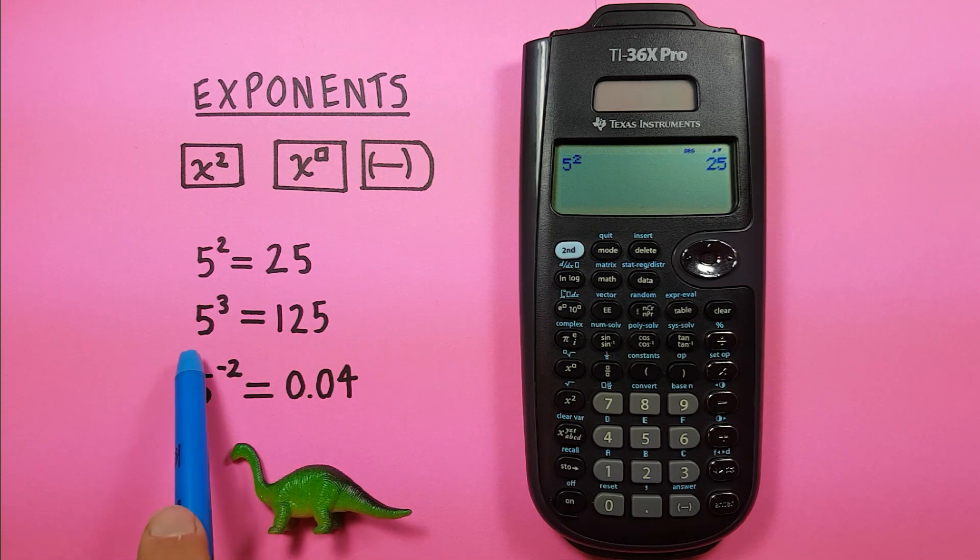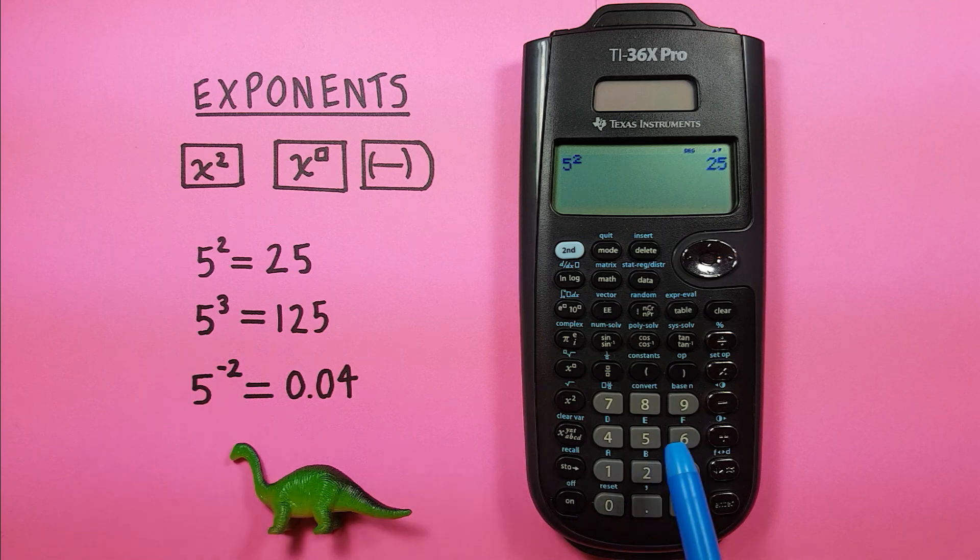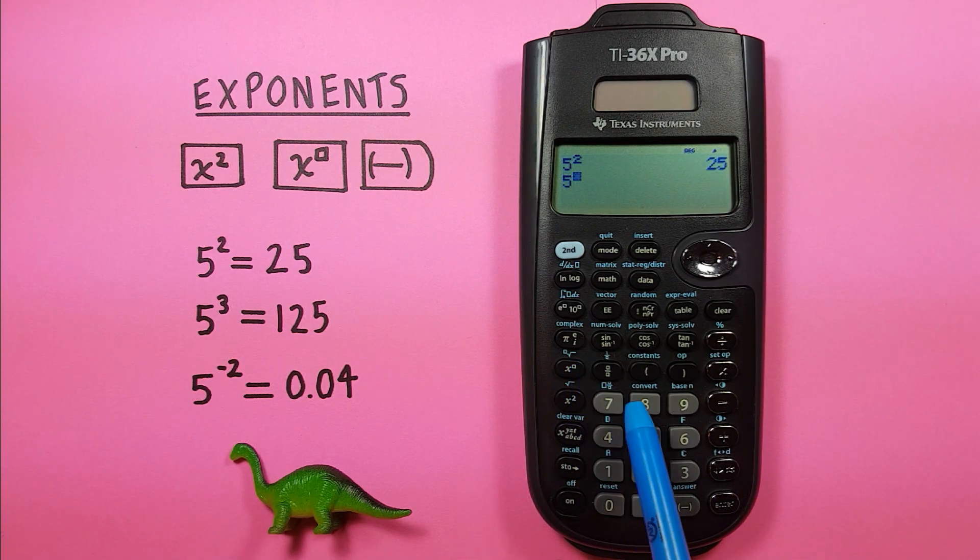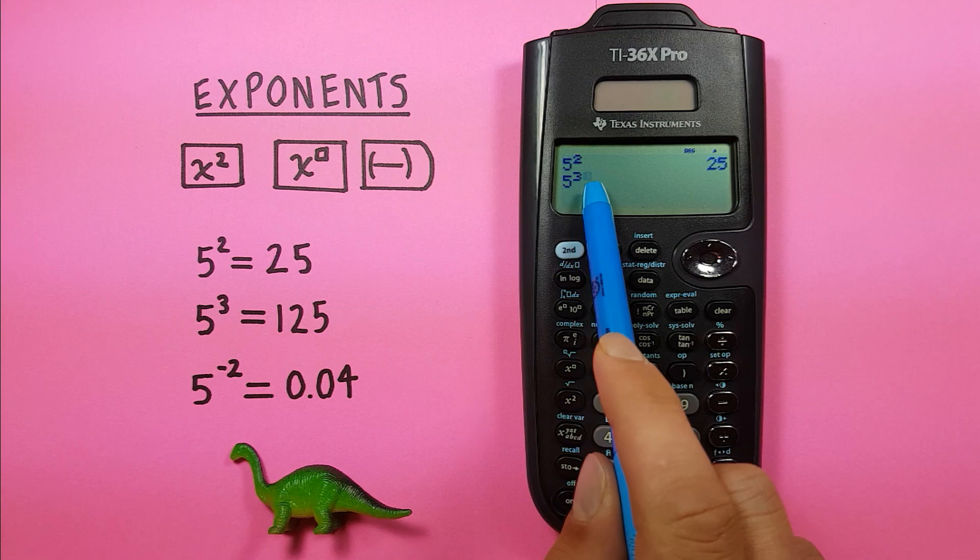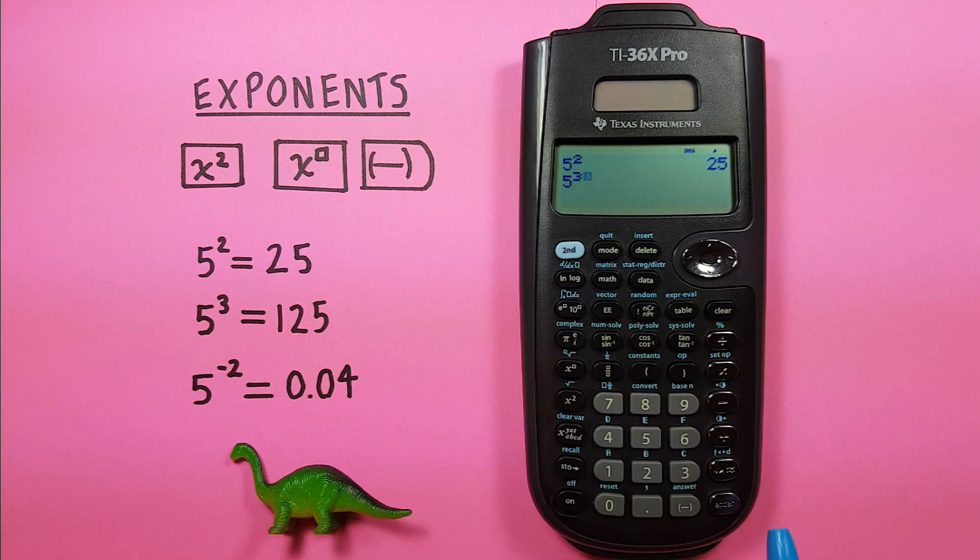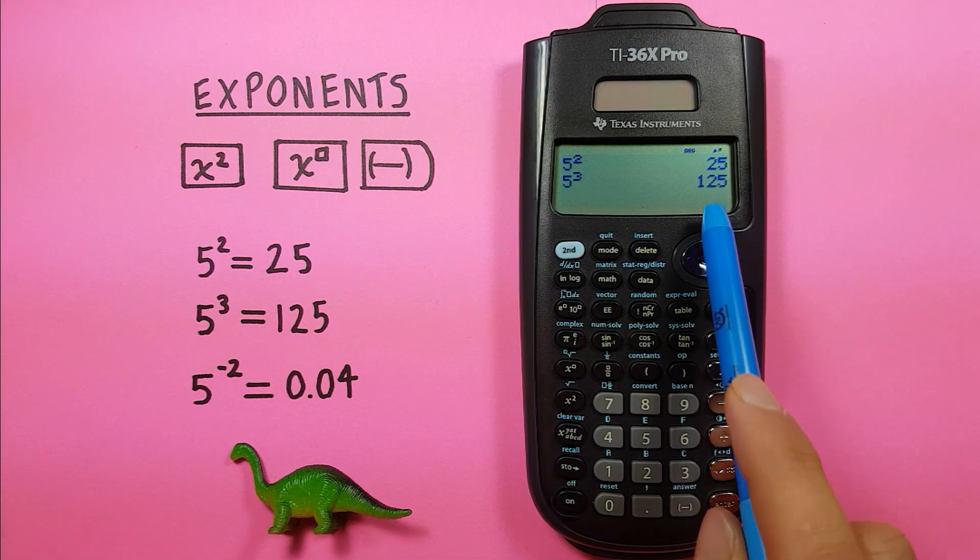So for example, let's say we want to cube 5 or 5 to the power of 3. We would go 5 exponent 3. You can see we now have a 3 in the top there and press enter and we have 125.